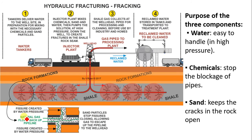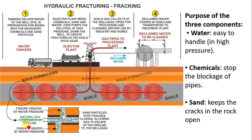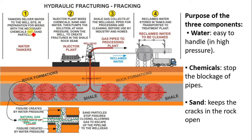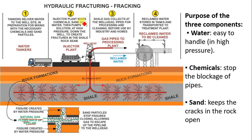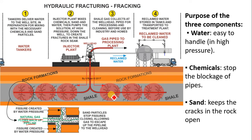Here you have the rock formation — the shale — which is impermeable and contains natural gas inside. Trucks and tankers deliver water to the well site for mixing with chemicals and sand. An injector plant then mixes the chemicals, sand, and water, and pumps the solution at high pressure down the well to create fractures in the shale rock seam, giving access to the oil and gas.